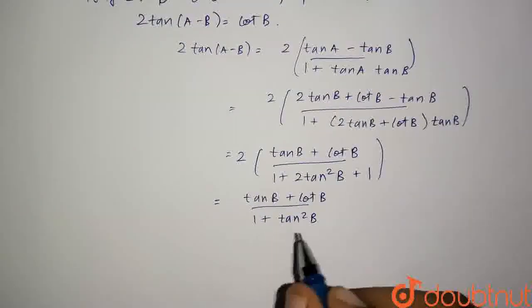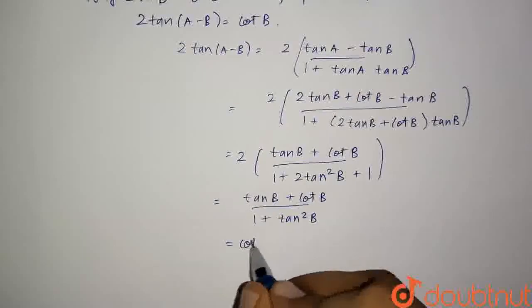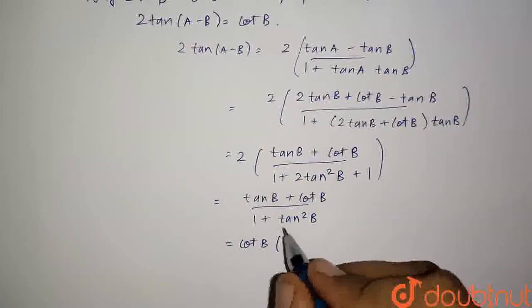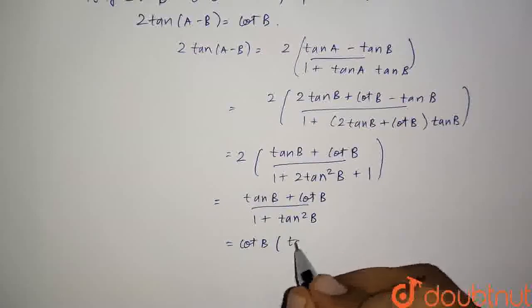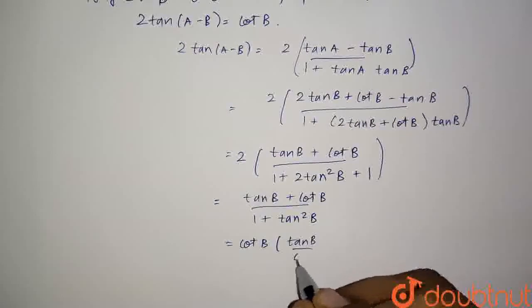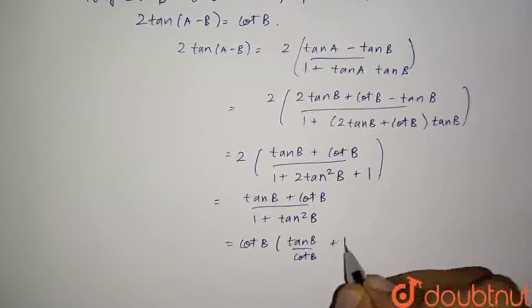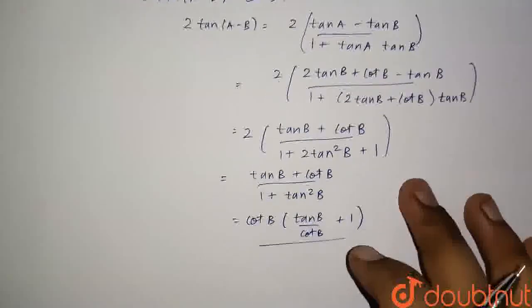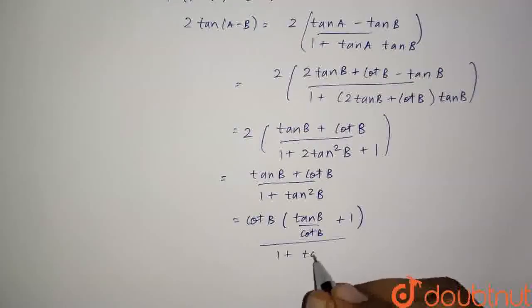We will take cot b common now. So cot b into, we will be left with tan b by cot b plus 1 whole upon 1 plus tan square b.